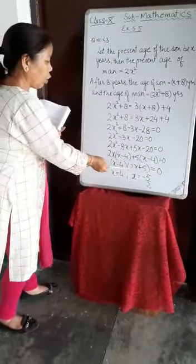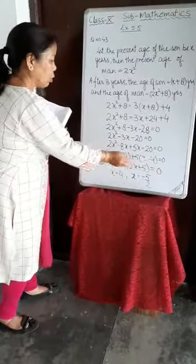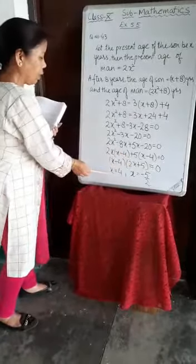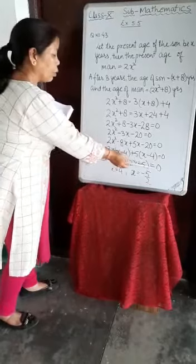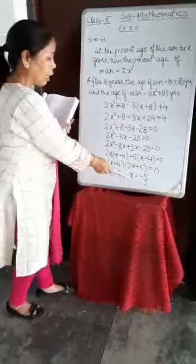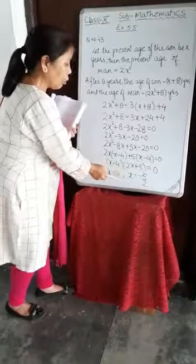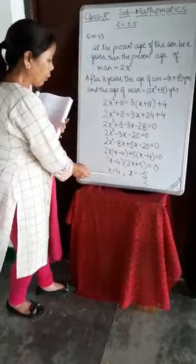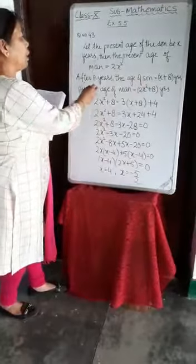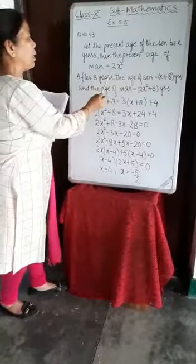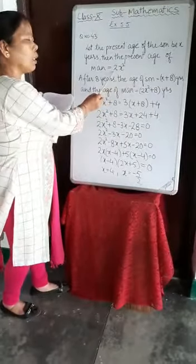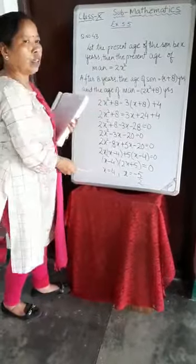The product of two terms equals zero, so either the first term or the second term is zero. If X minus 4 equals 0, then X equals 4. If 2X plus 5 equals 0, then X equals minus 5 over 2. Since age cannot be a negative number, this value is neglected. The value of X is 4, meaning the age of the son is 4 years. The present age of the man is 2X squared — putting X equals 4, we get 2 multiplied by 16 equals 32. So the age of the man is 32 years.